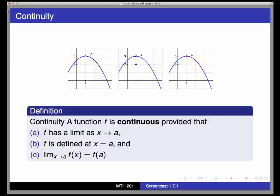More precisely, we're going to define a function f to be continuous if three criteria are met simultaneously. First, f must have a limit as x approaches a. Second, f must be defined at x equals a. And third, to bring those two pieces together, the limit as x approaches a of f of x has to actually equal f of a.